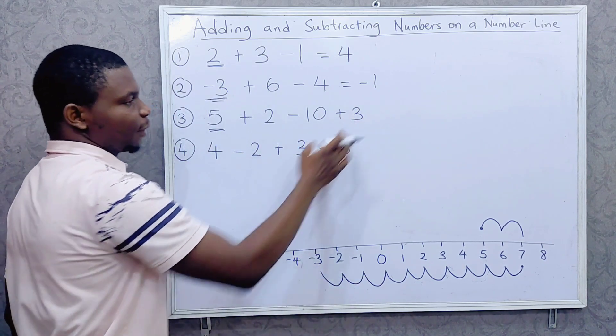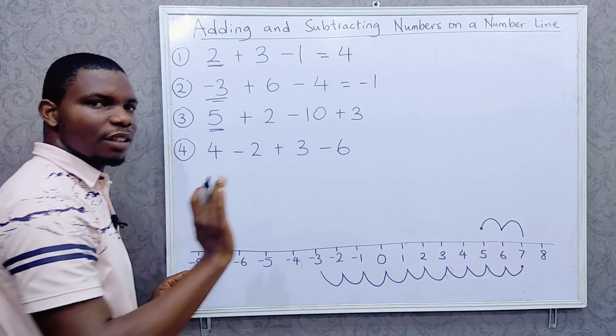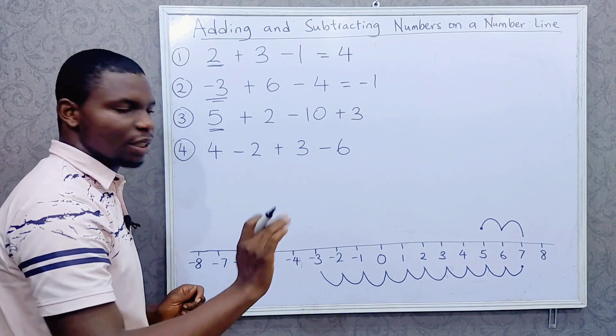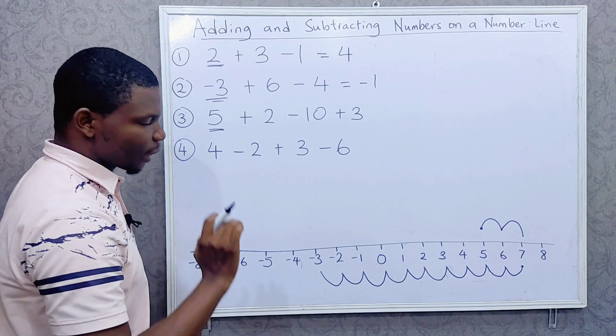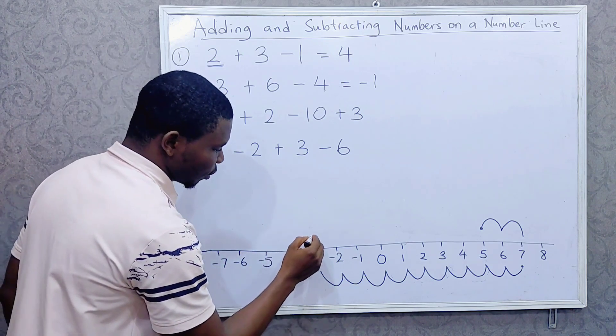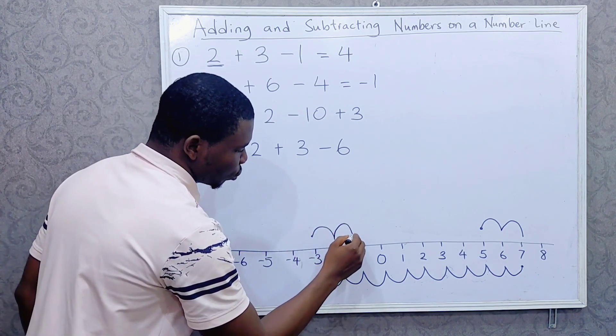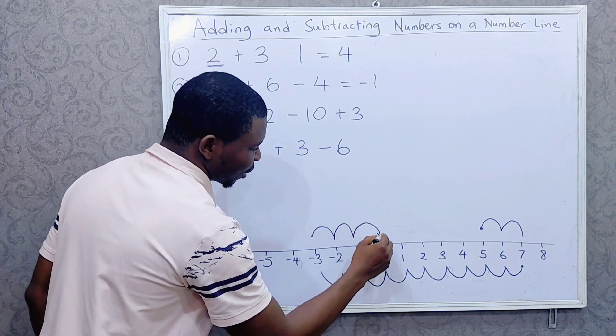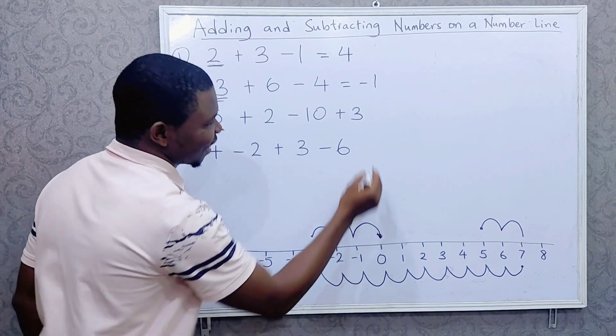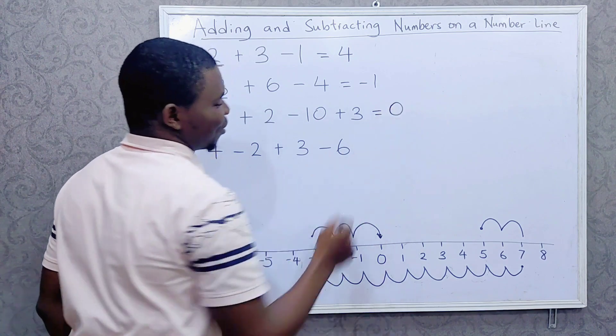Then plus 3. Plus 3 means we are going to the right. How many times? We are going to the right 3 times. That would be 1, 2, 3. So what's the answer? The answer is 0. Very well.